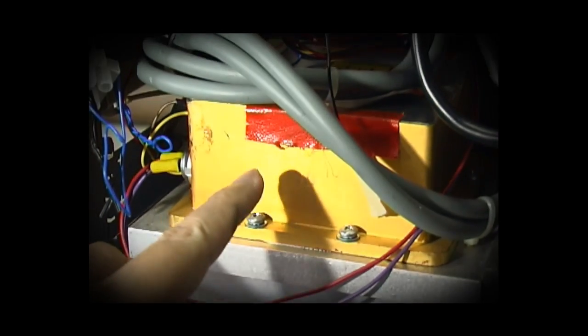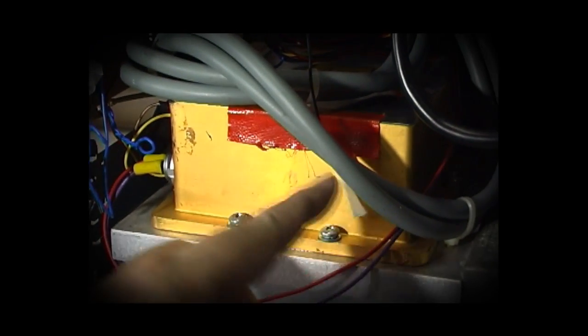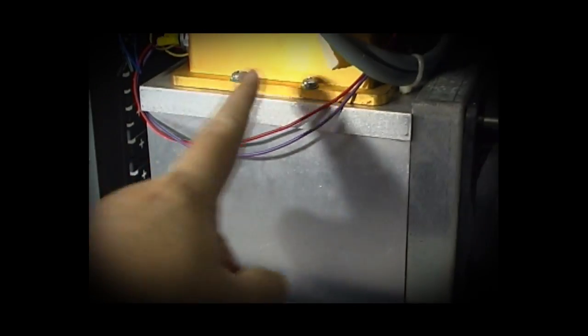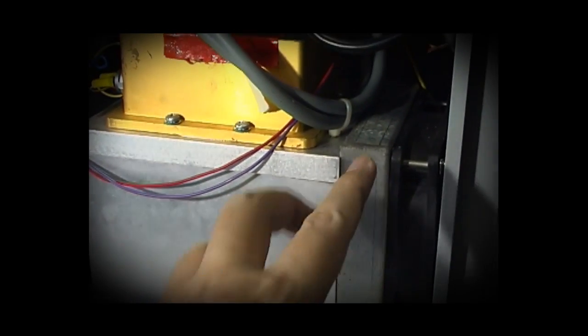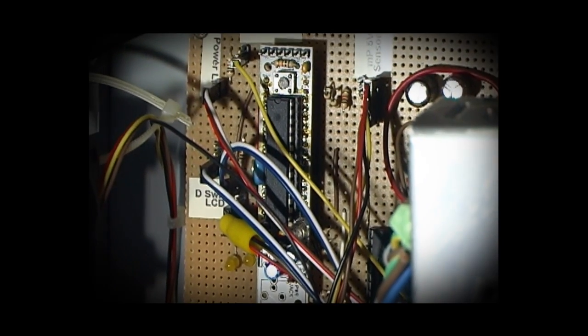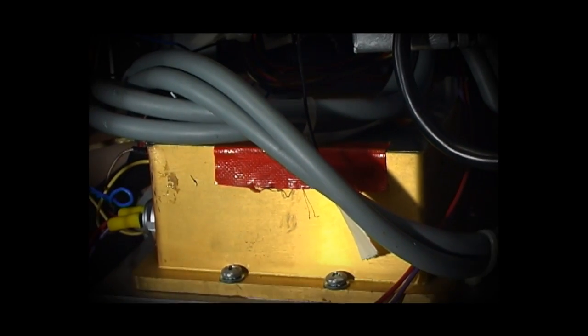This is the laser itself, the FAP package. It's mounted on this solid block of heat sink together with a fan. Inside here, you can see the microprocessor monitoring the temperature of the laser on the diode as well as the base.